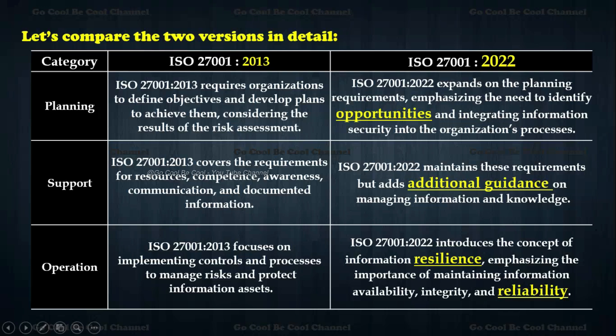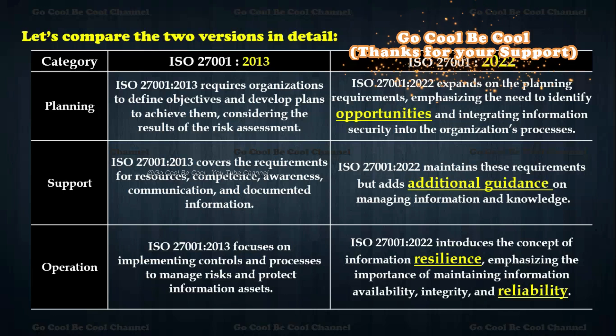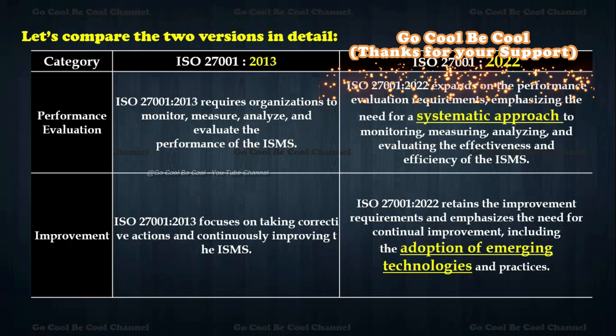For operations, ISO 27001 2013 focuses on implementing controls and processes to manage risk and protect information assets. ISO 27001 2022 introduces the concept of information resilience, emphasizing the importance of maintaining information availability, integrity, and confidentiality. Overall, 2022 talks extensively about the risk-based approach across all these areas.